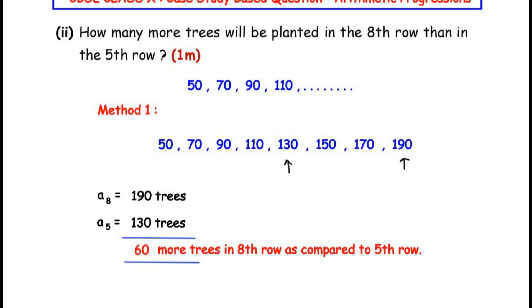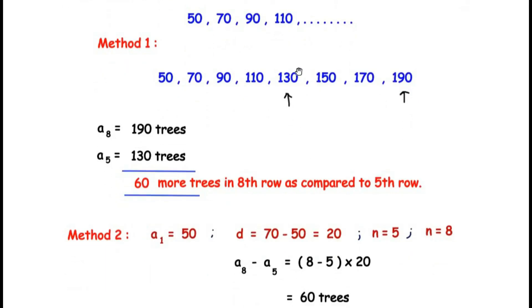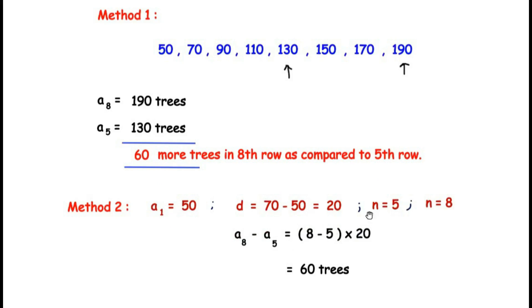Method 2 — a shortcut: instead of extending the sequence, simply take the difference of the row numbers and multiply by the common difference. So (8 − 5) × 20 = 3 × 20 = 60. This is especially useful for large row numbers, such as finding the difference between the 100th and 85th rows: (100 − 85) × 20 = 300.